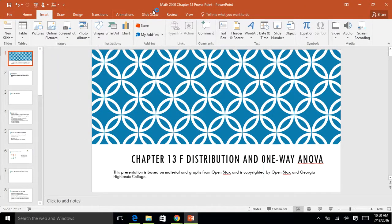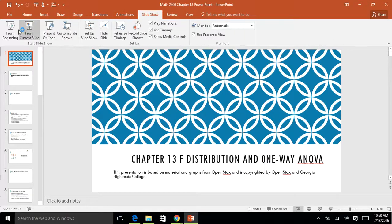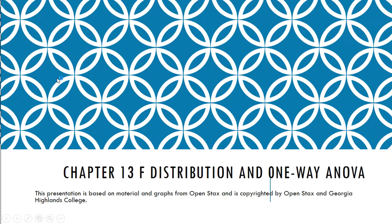We're going to go to Chapter 13 now. Let me start the slideshow. So Chapter 13 is F distributions and one-way ANOVAs.